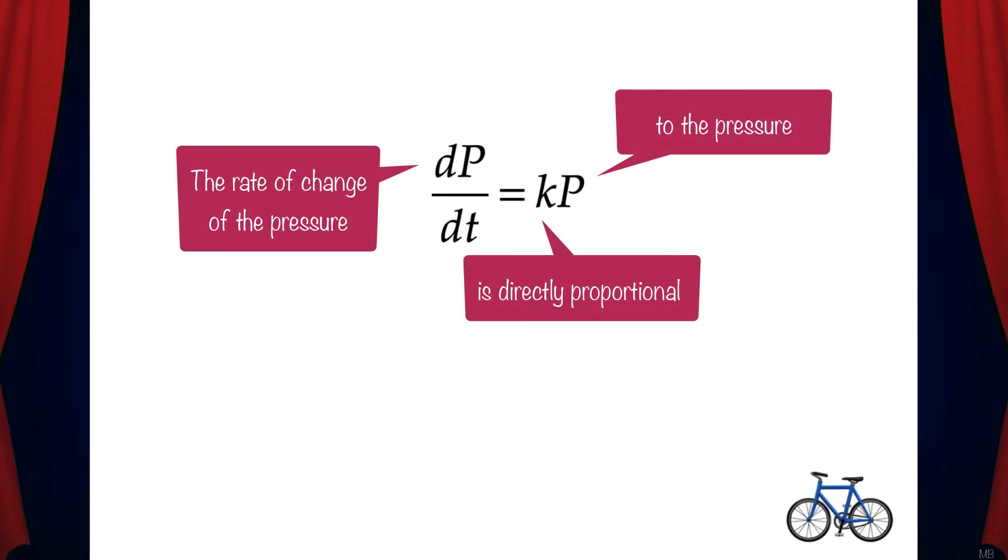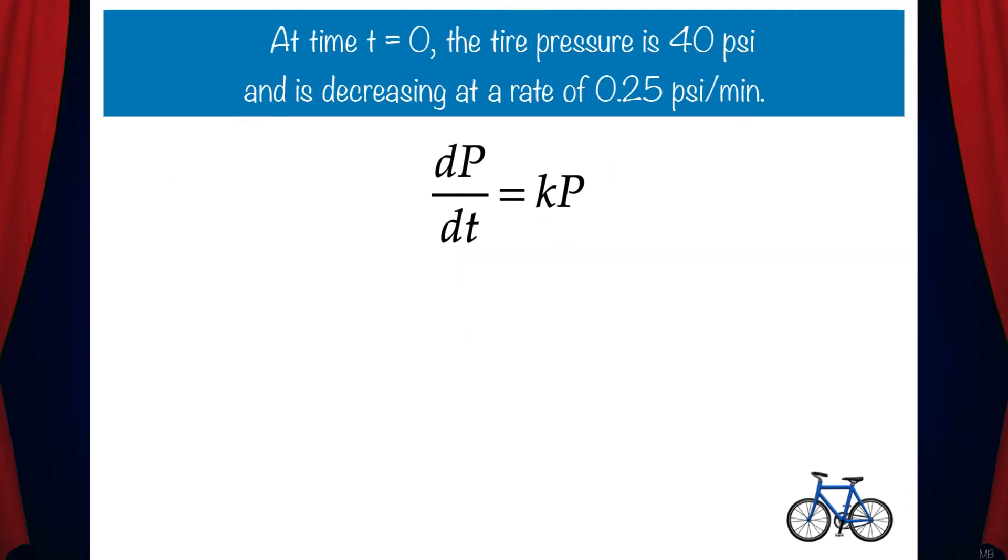Since the rate of change of tire pressure is directly proportional to the pressure, we can use the differential equation dp/dt equals kp. And we know that at time t equals zero, the tire pressure is 40 psi and is decreasing at a rate of 0.25 psi per minute. We can use this information to solve for k, and that gives us k equals negative 0.00625.